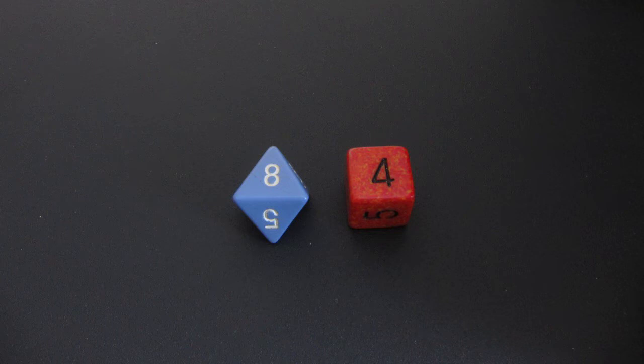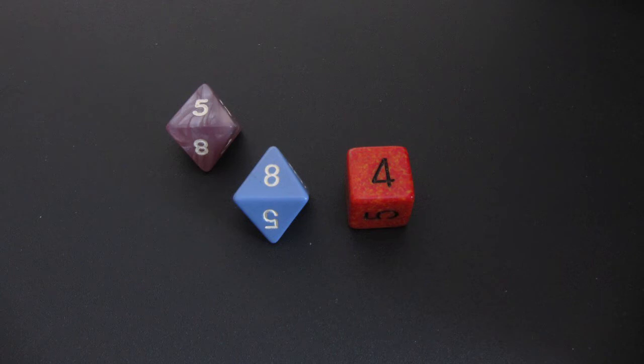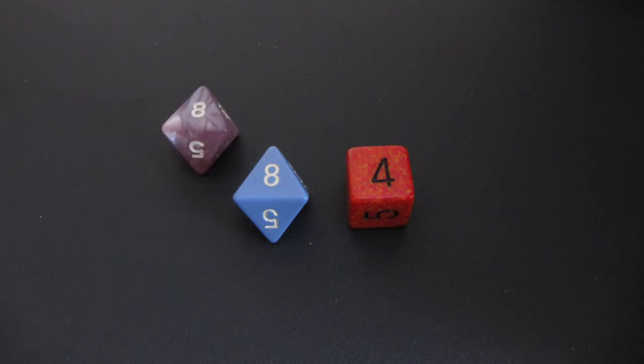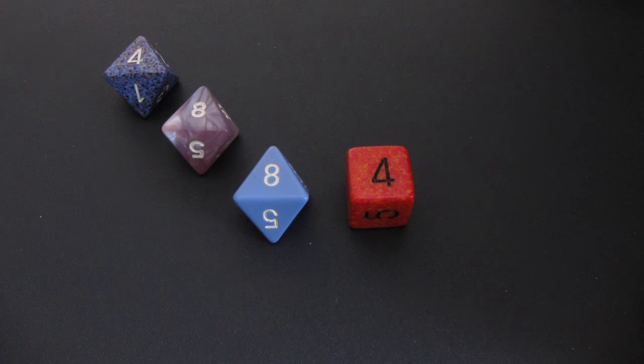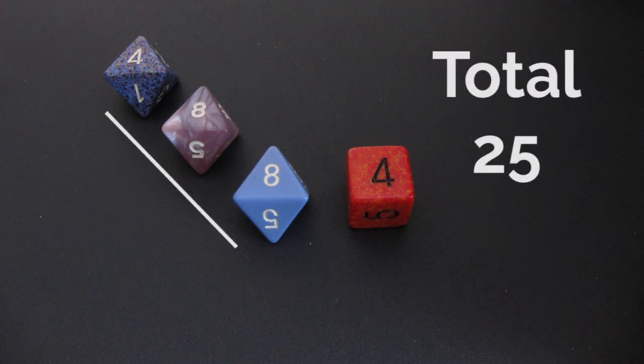If a dice rolls its maximum value, you can roll an additional die of the same type and add it to the original die. This can continue to occur when subsequent rolls are also the maximum possible value for that die type, leading to powerful moments and very high totals.